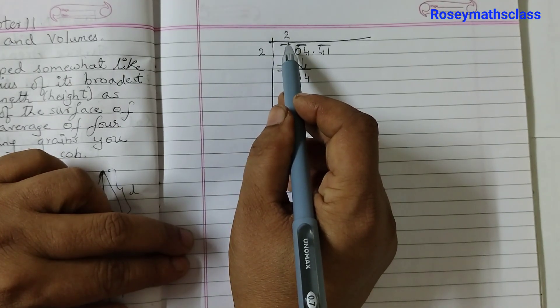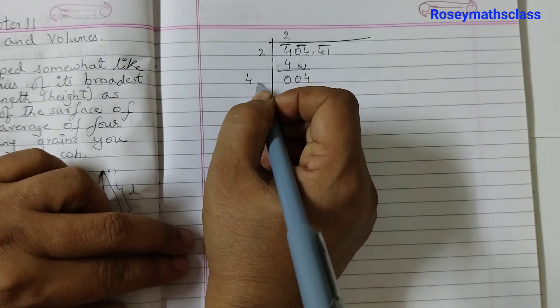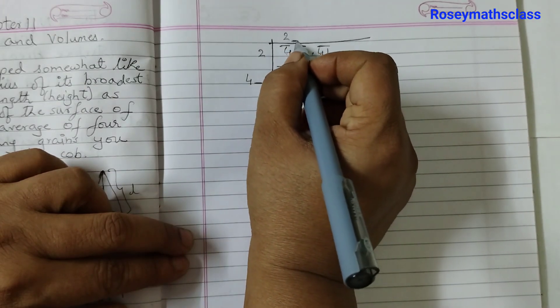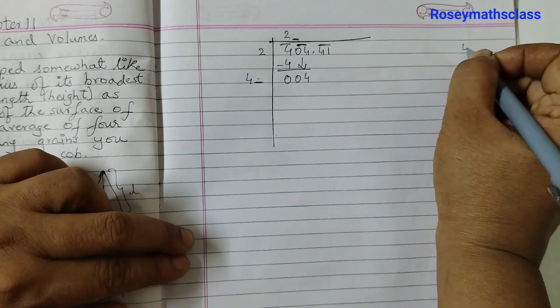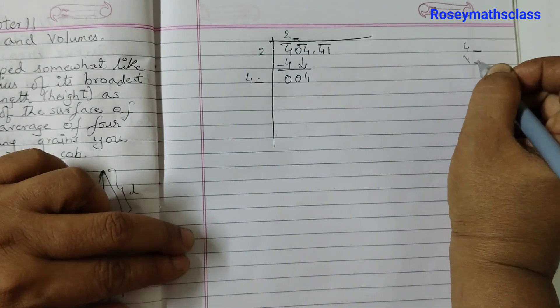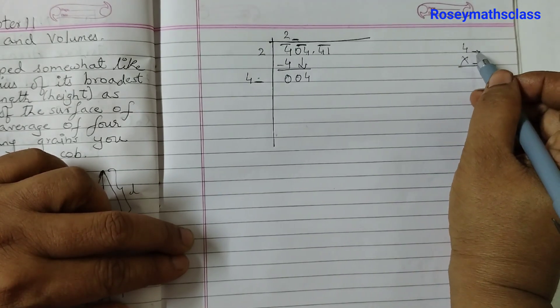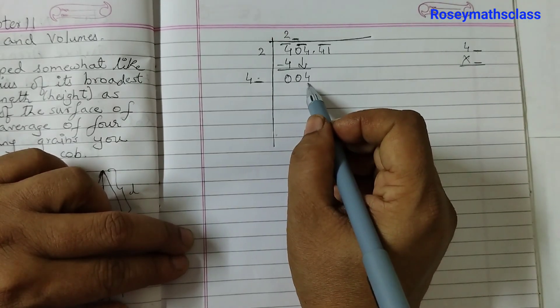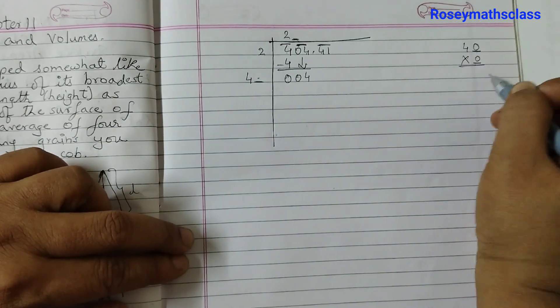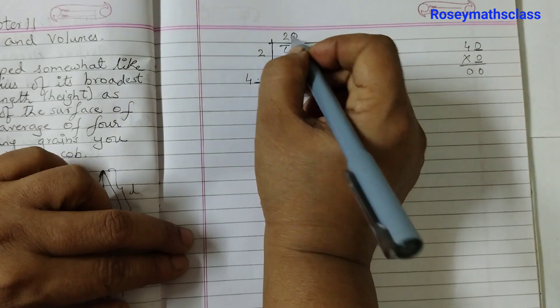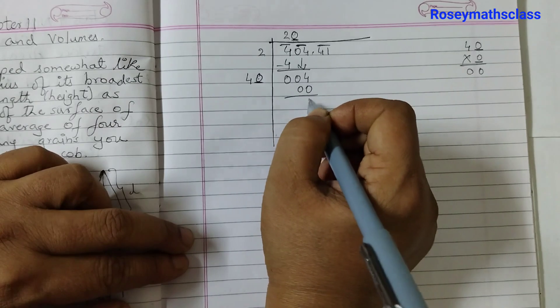Double the quotient and enter it with the blank on its right. So 2, 2 plus 2 would be 4, and then we put a blank here and the same number goes here. So now we need to think what number should I multiply? So we need to think what number should I enter here so that we get something which is equal to 4 or less than 4. So the only number that goes is 0 because that gives you 0.